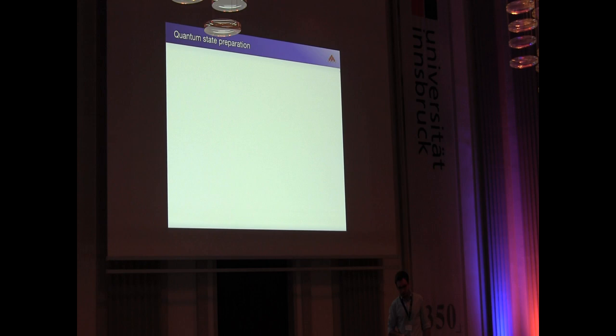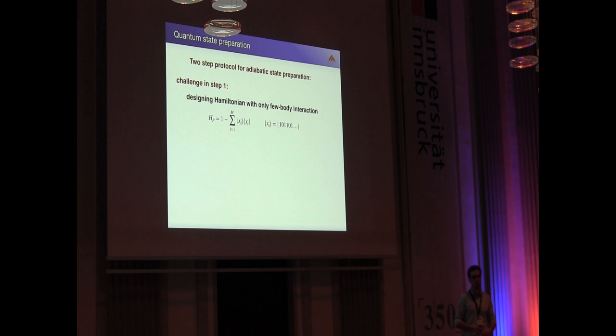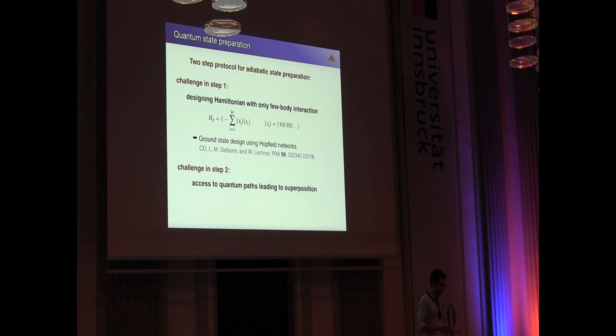Both of these steps come with their own challenges. The challenge in step one is that we want to realize such a Hamiltonian with only few-body interaction terms which is very relevant for implementation. For example, if you would take this projector and decompose it into sigma z interactions, it turns out that one would need in general n-local interactions which is very unphysical. So how to design these ground states we described in this paper where we used Hopfield networks. The challenge in step two is how do we access these quantum paths leading to a certain superposition, and the solution is presented in this paper where we use a lattice gauge model and lattice gauge degrees of freedom in order to program those amplitudes.